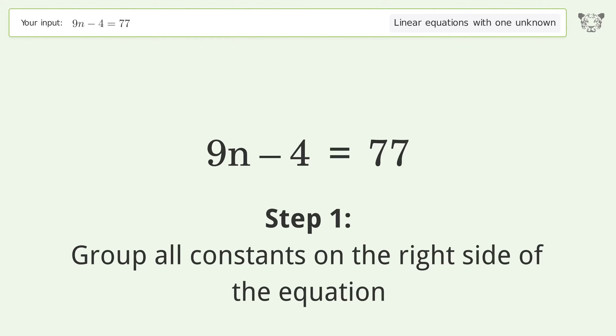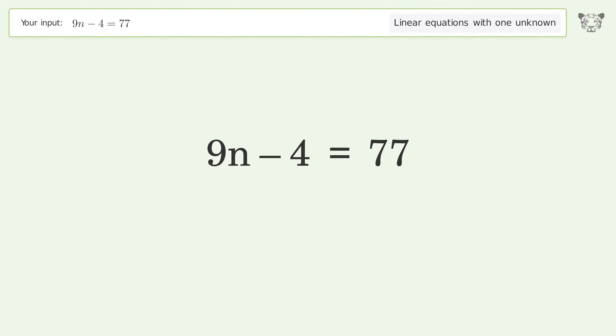Group all constants on the right side of the equation. Add 4 to both sides. Simplify the arithmetic.